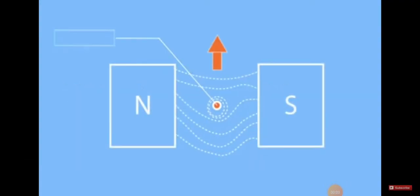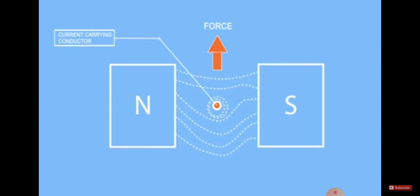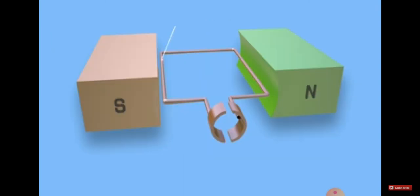Today our topic is about the working principle of AC and DC motors. When current passes through a current-carrying conductor, a force is applied around that conductor — this is the electric force or attraction of force.